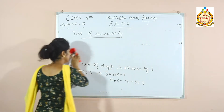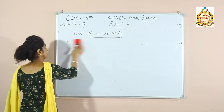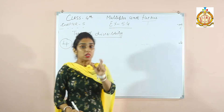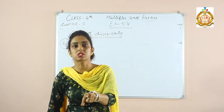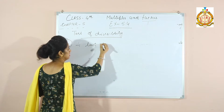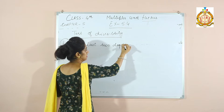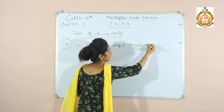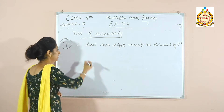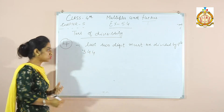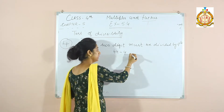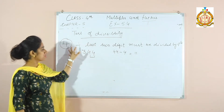Next, divisibility by 4. The last two digits of the number must be divisible by 4. For example, 344 — the last two digits are 44, and 44 divided by 4 gives 11, so it is divisible by 4.